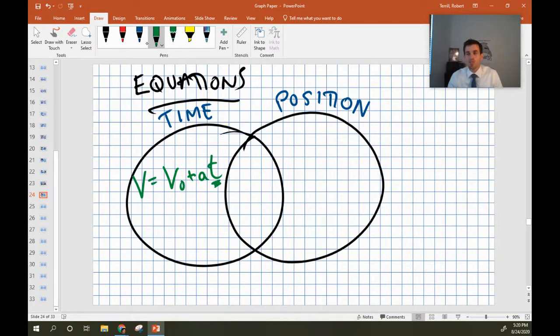So this one gives us our final position, in terms of our initial position and our acceleration and time. Our next equation, and it's not really going to fit in here, so you'll just have to imagine that I fit it in here. Our next equation is this one here. And notice that it has both position variables and time variables in it. It has two of each actually.